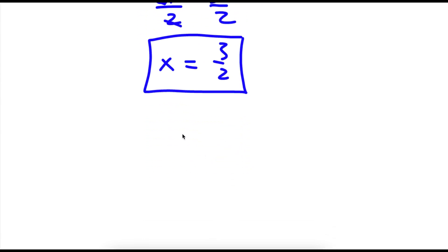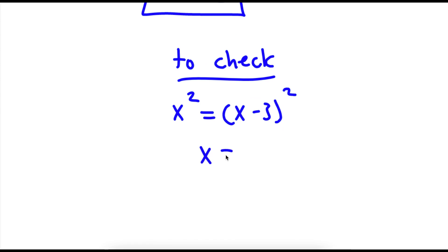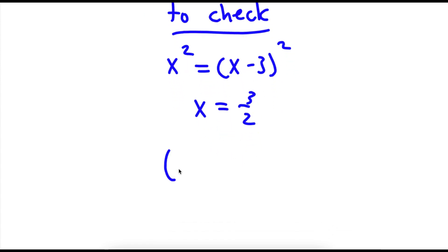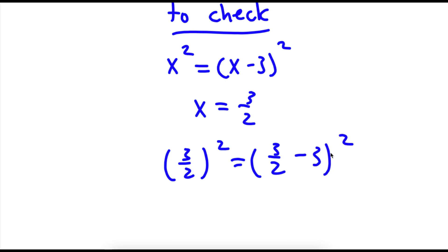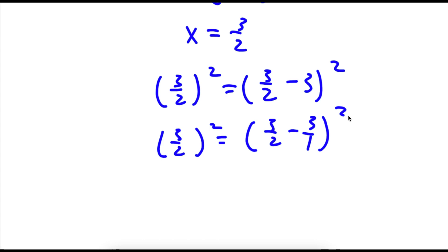Now to check, my original equation was x squared is equal to x minus 3 squared. Now x is equal to 3 over 2. So now I have 3 over 2 squared is equal to 3 over 2 minus 3 squared. Now 3 over 2 minus 3 is the same thing as 3 over 2 minus 3 over 1, squared.